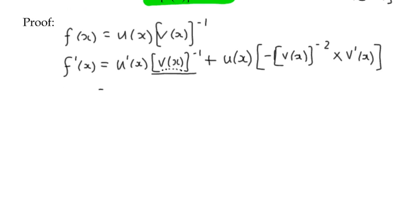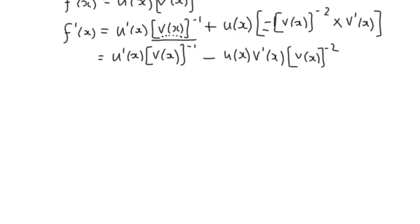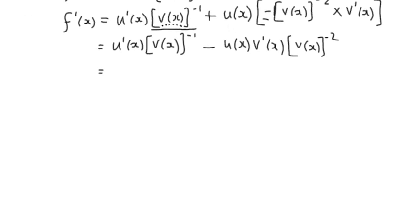So, I'm just going to leave the first function as it is for a moment. I'm going to tidy up, simplify the second expression. We've got a negative multiplier, so the plus is going to become a negative, so we've got a difference of terms now. We've got u of x, I'm going to take the function at the end, v dash x, which is multiplying, and we've still got this v of x to the power negative 2. So we've got in each of the two expressions a negative power, so we can rewrite that in fraction form. The first one becomes u dash x over v of x minus u of x, v dash x over v of x squared.